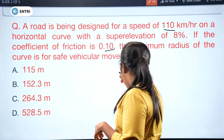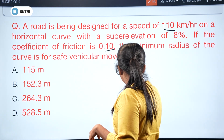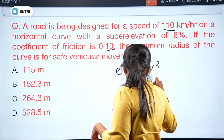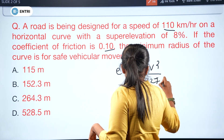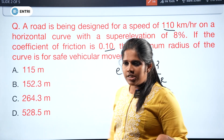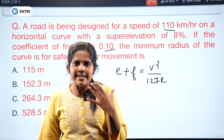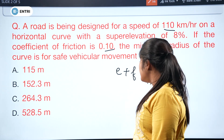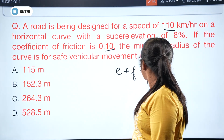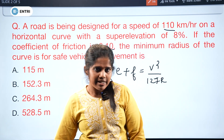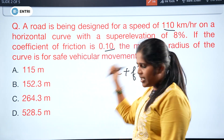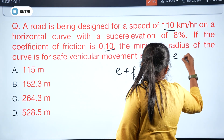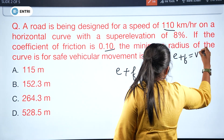The super elevation expression is: e + f = V² / 127R. This derives from V² / 2GR, where G is 9.81. Converting speed from km/h to m/s gives the final expression. One equation is e + f = V² / 225R.